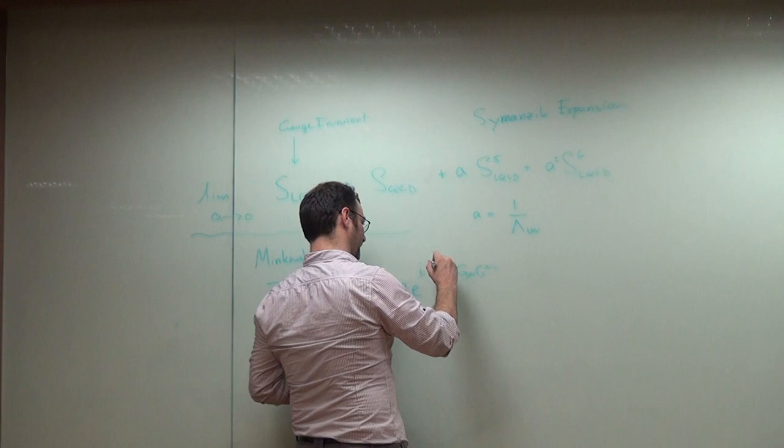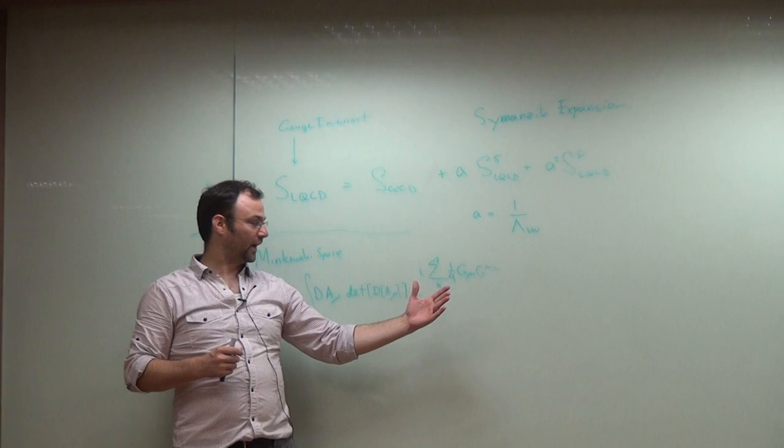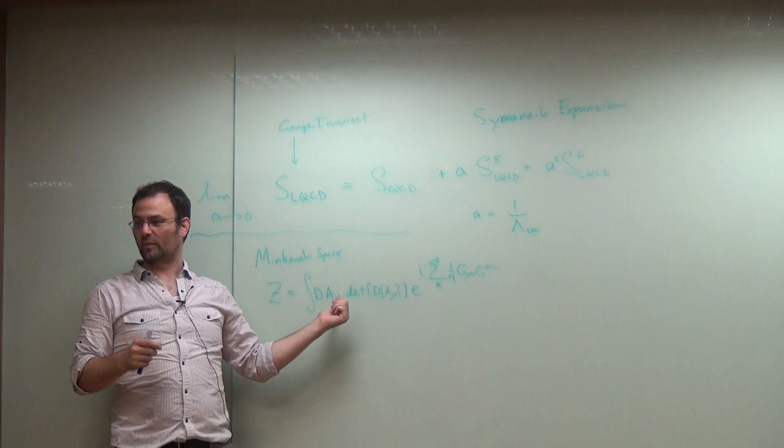So this is a wildly oscillating integral, right? So how do you decide which sets of A to keep? If you could come up with an algorithm to do this in Minkowski space, you might get enough of a prize.